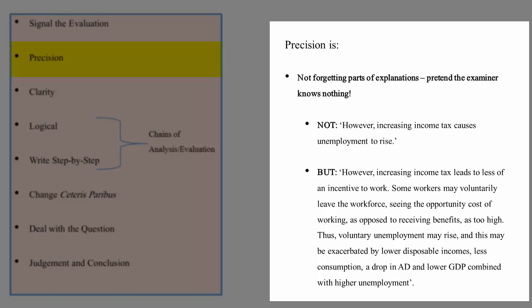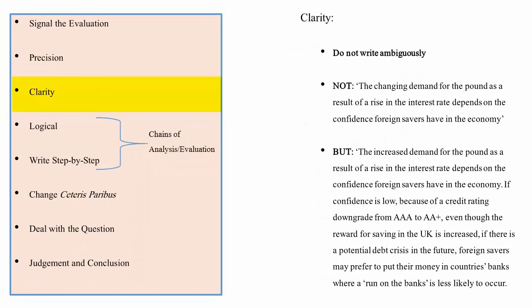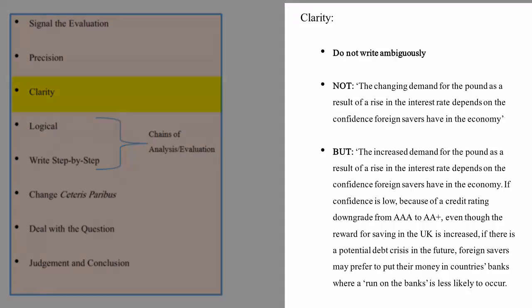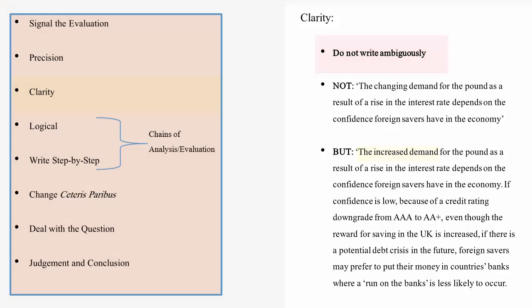Again, as for analysis, being clear is extremely important. Don't write ambiguously. The top example on the screen is ambiguous because it says the change in demand - well is it going up, is it going down, and why is the confidence of foreign savers an issue? The good example below goes on and explains why that is an issue. Have a read of that and you'll see what being unambiguous should look like.